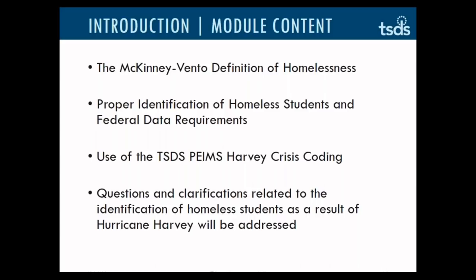TEA had the opportunity to talk with a number of superintendents and hope this information will be helpful with properly coding and identifying impacted students. To date, Texas local education agencies' coding and reporting of students impacted by Hurricane Harvey who meet the federal McKinney-Vento education definition of homeless is significantly lower than anticipated. Similarly, use of the Harvey Crisis Codes 5A, 5B, and 5C is also much lower than was expected.